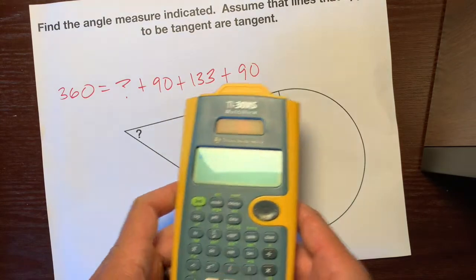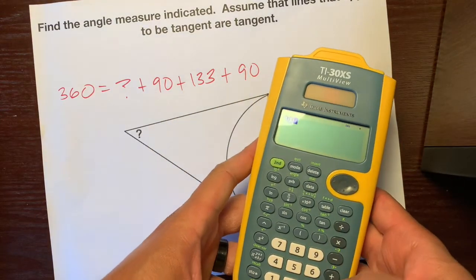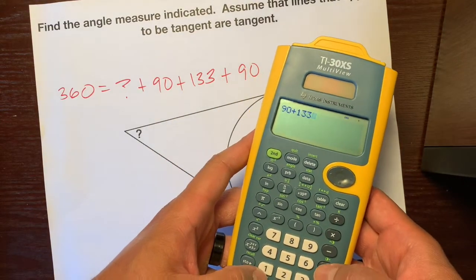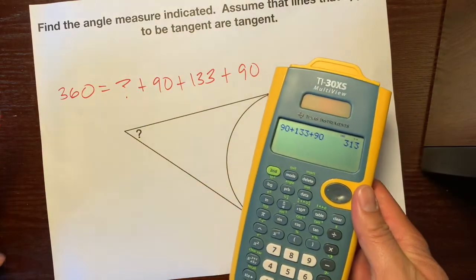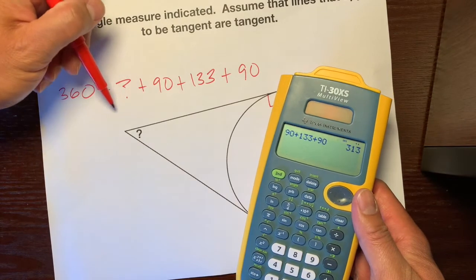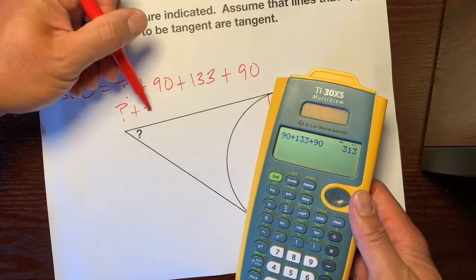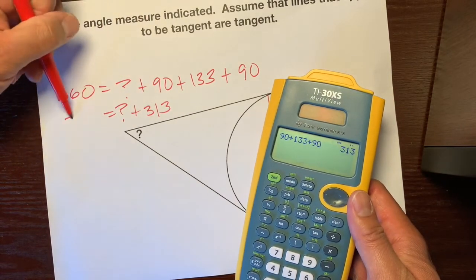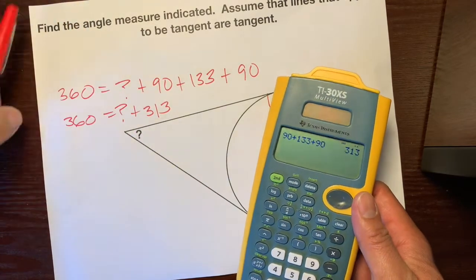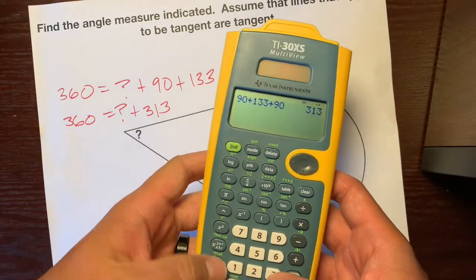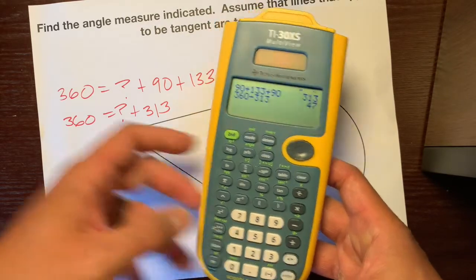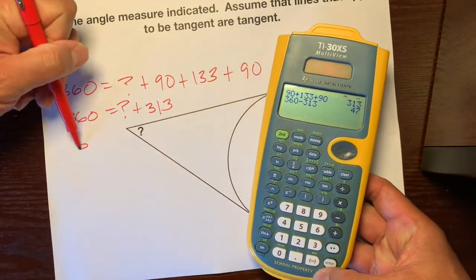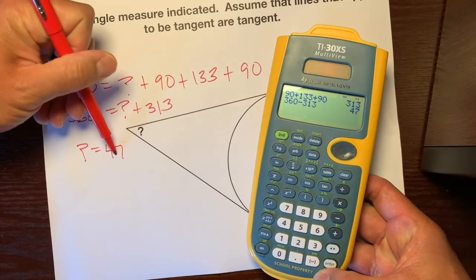So question mark plus 90 plus 133 plus 90 equals 360. Then we'll take our calculator. 90 plus 133 plus 90 is equal to 313. So we have question mark plus 313 is equal to 360. We're going to subtract that 313 from 360, and our answer is 47. So that angle is 47 degrees.